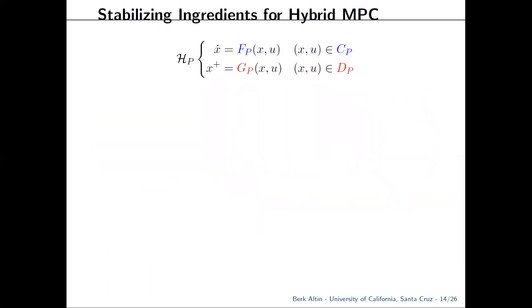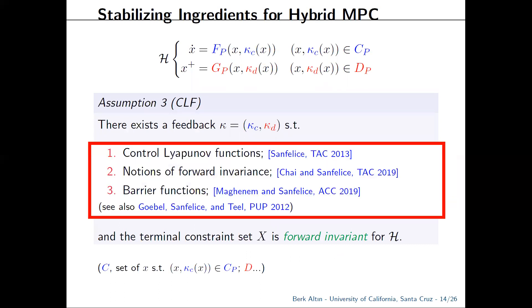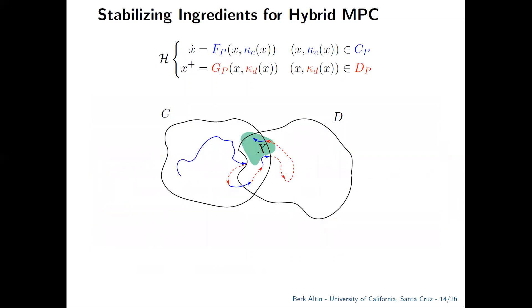The stabilizing aspect of the MPC scheme comes from the consideration of two local feedback controllers, which render the terminal constraint set forward invariant for the resulting closed loop and also satisfy these inequalities. And you may recognize this as the typical CLF assumption in the literature adapted to the hybrid case, and the relevant notions in the hybrid setting can be found in these references.